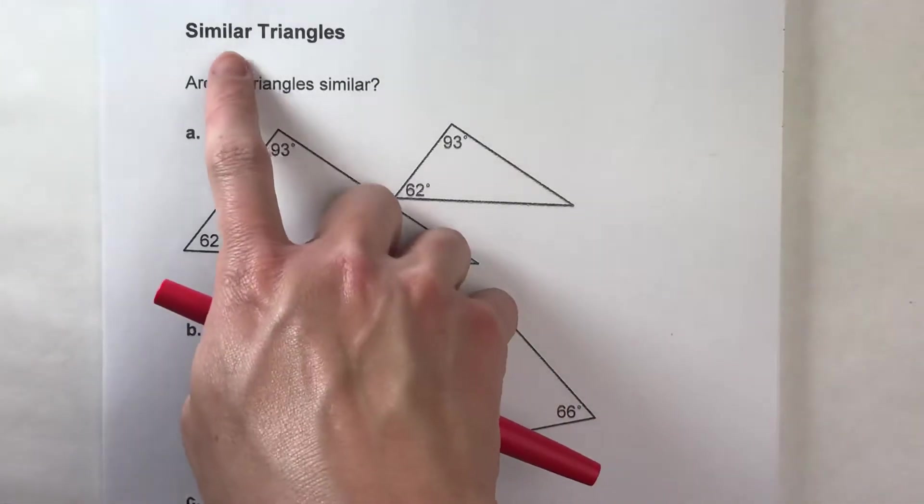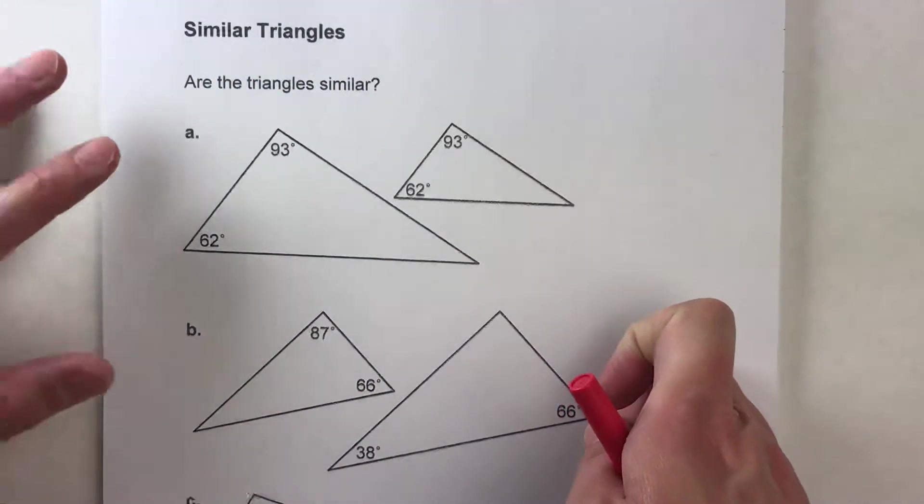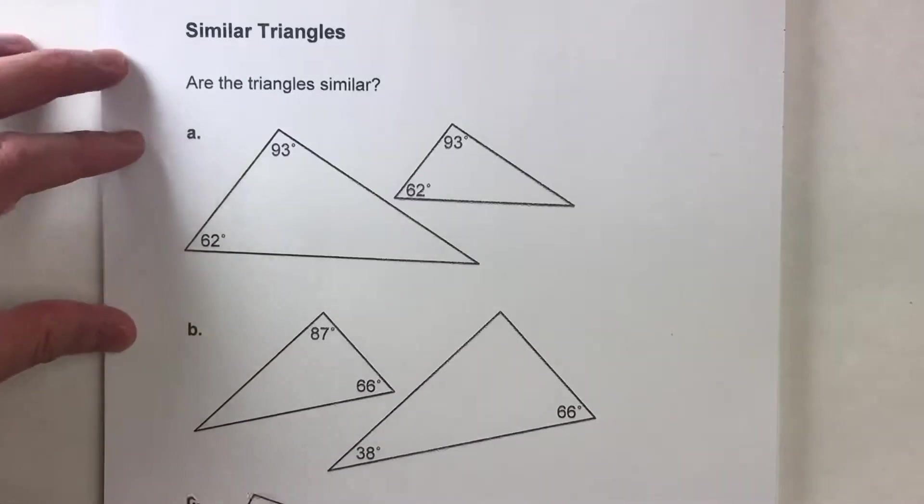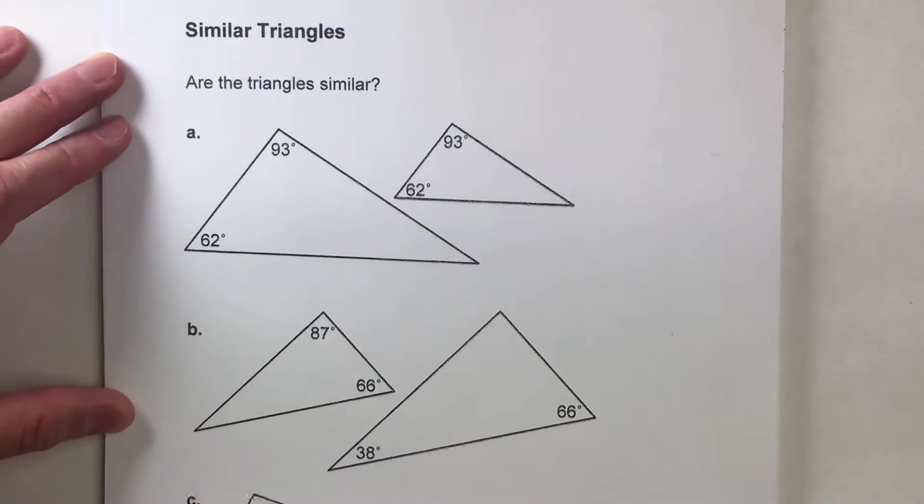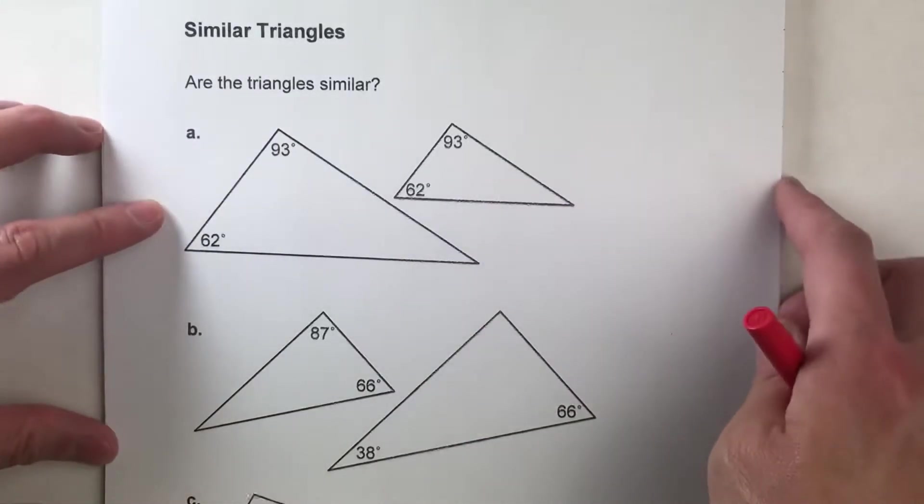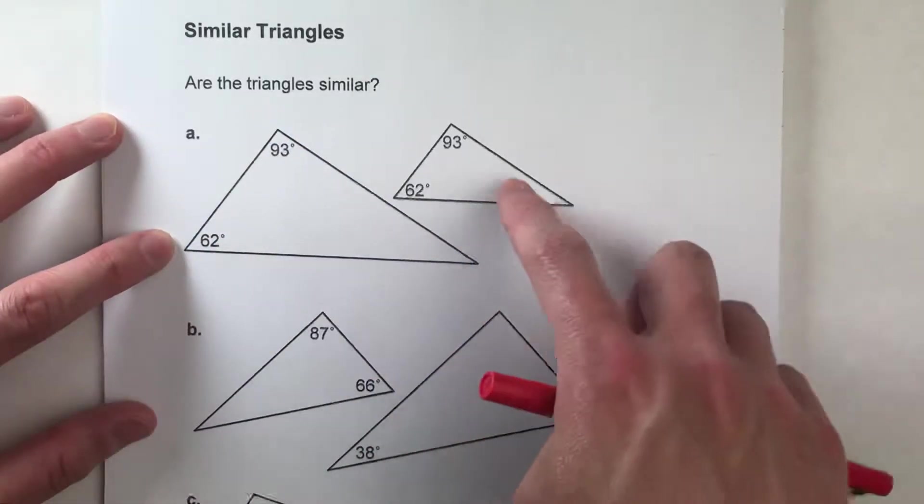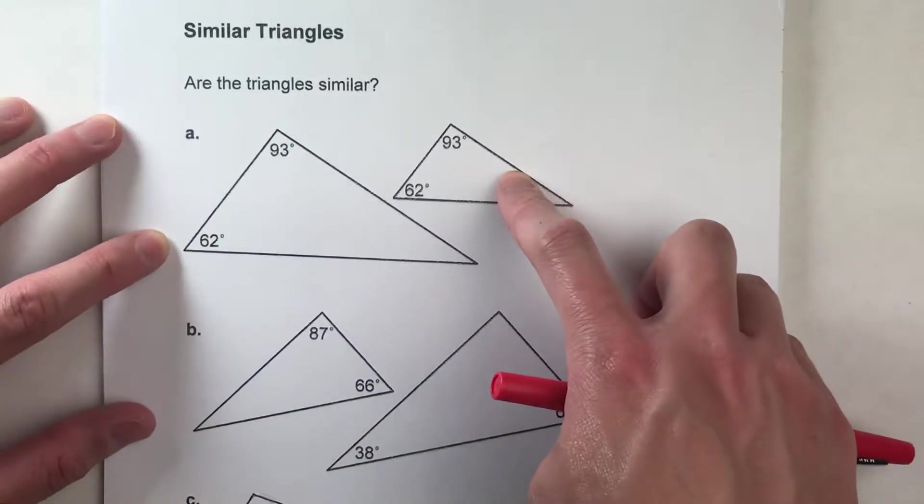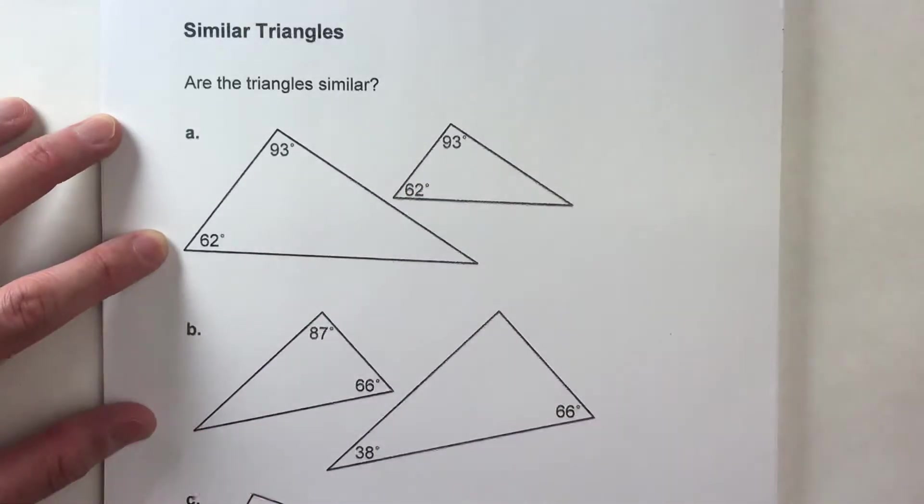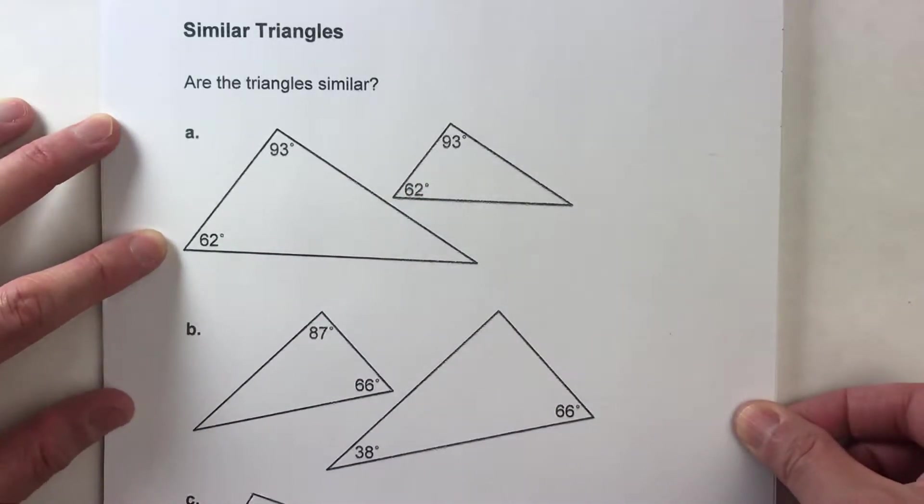So today we're working with similar triangles. Now we know similar polygons in general have the same shape but are different sizes. So what we're testing to see is if these two triangles, for example, have the same shape but one's just bigger than the other. It's been scaled up, it's been dilated.